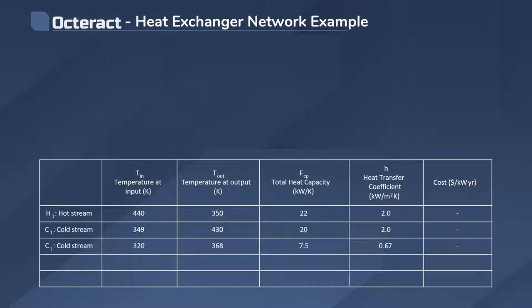And two cold streams C1 and C2, which need to increase their input temperatures at the output of the network.